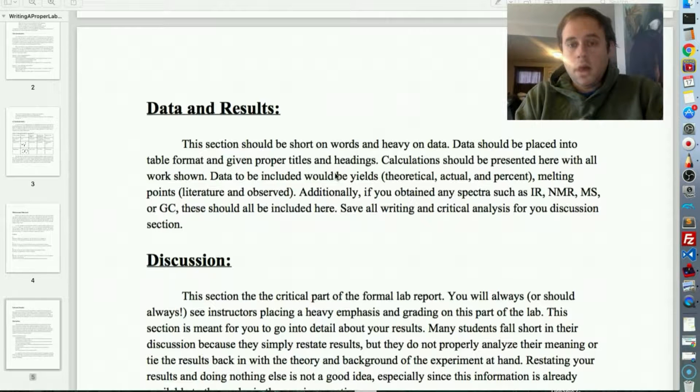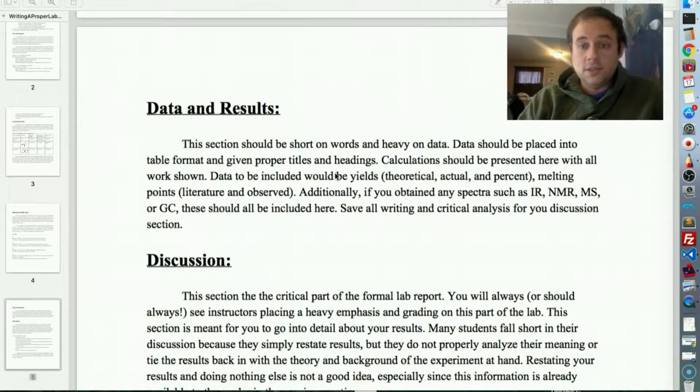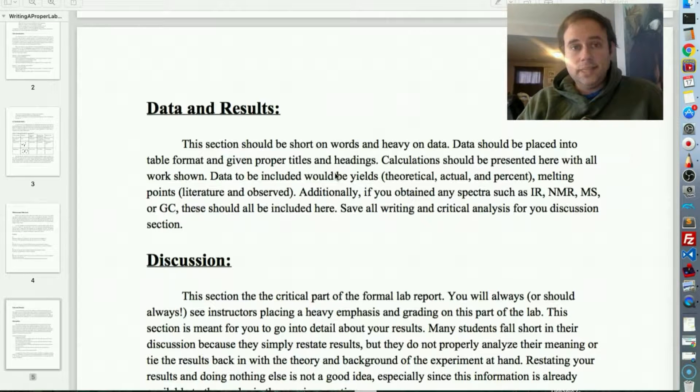All right, calculations should be presented here with all work shown. Data should be included or could include yields, so theoretical yields. You need to show calculations with limiting reactants, actual yields and percent yields. Melting points, both your observed melting point and the literature melting point. And additionally, if you have any spectra, such as IR, NMR, mass spec, GCs, anything of that nature, where you have sort of graphical representations that are being analyzed, they should be included as well.